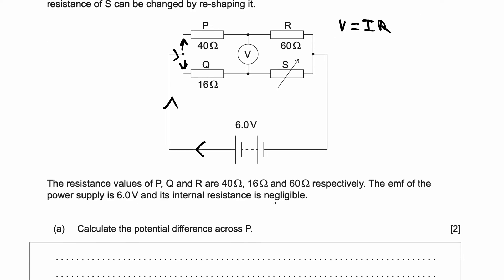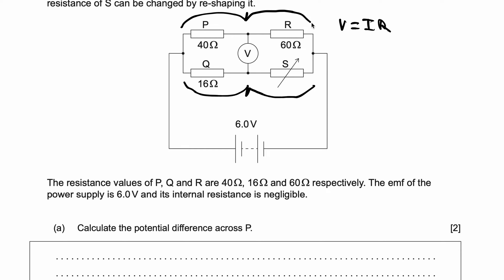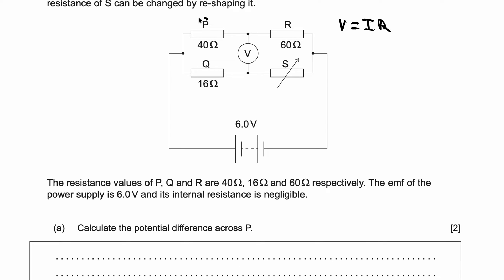We know the overall circuit has an EMF or potential difference of 6 volts. This branch has a potential difference of 6 volts and this branch altogether also has a potential difference of 6 volts. Both of them have 6 volts as it's a parallel circuit — the potential difference must be equal at all points. We know that the total resistance across this top branch is 100 ohms.